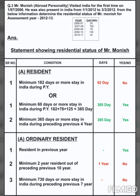And in 2010-11, the stay is nil. So let's start with the statement. The heading is: Statement showing residential status of Mr. Monish. Now draw the table with columns: SR number, condition, days, and years.